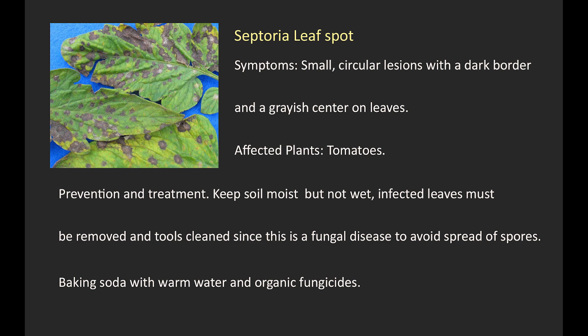10. Septoria leaf spot. Symptoms: small, circular lesions with a dark border and a grayish center on leaves. Affected plants: tomatoes. Prevention and treatment: keep soil moist but not wet. Infected leaves must be removed and tools cleaned, since this is a fungal disease, to avoid spread of spores. Treatment: baking soda and organic fungicides.